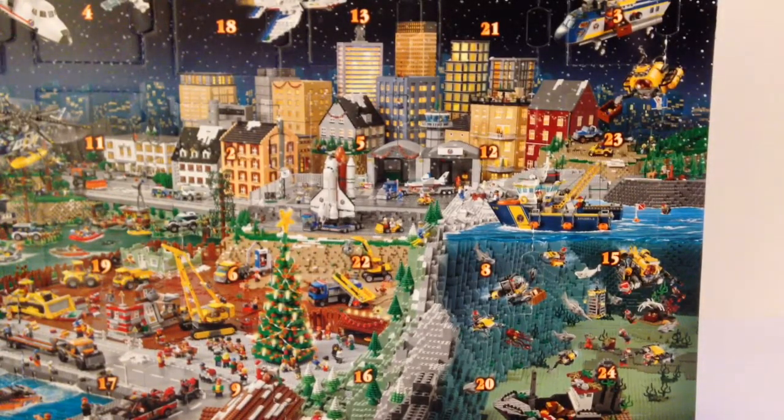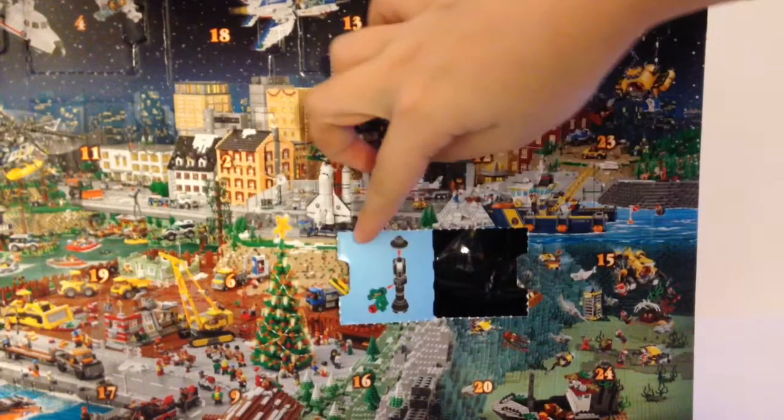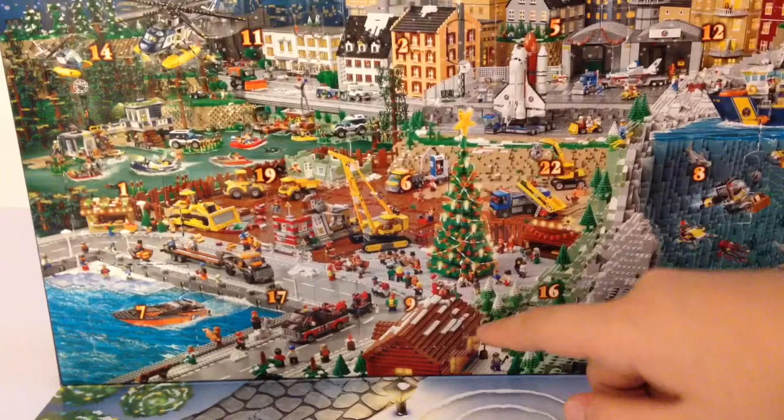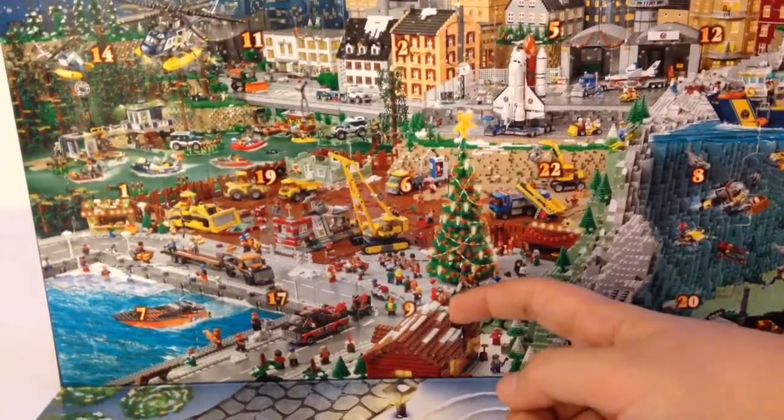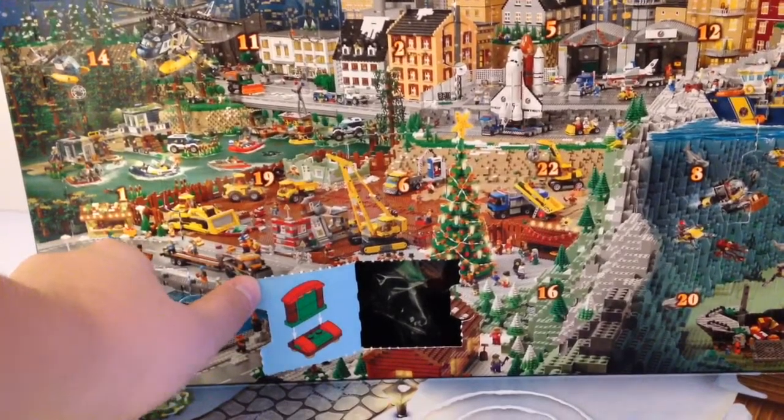So first taking a look at box number 8, which is over here to the side, we get a street lamp for our city. And then box number 9 is way down there at the bottom. If we open that up, it is what appears to look like a couch or a chair.